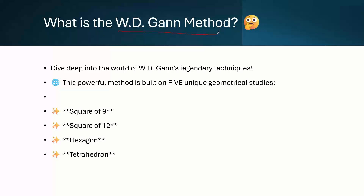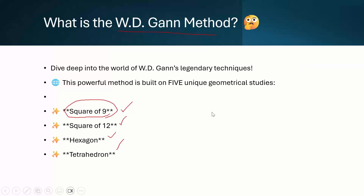This W.D. Gann concept is more or less known to many of you through the Square of 9 principle. But this is not the only method of W.D. Gann. The major methods are Square of 12, Hexagon, Tetrahedron and Square of 9. All these four things are based on geometrical figures, and all these things were innovated by W.D. Gann.